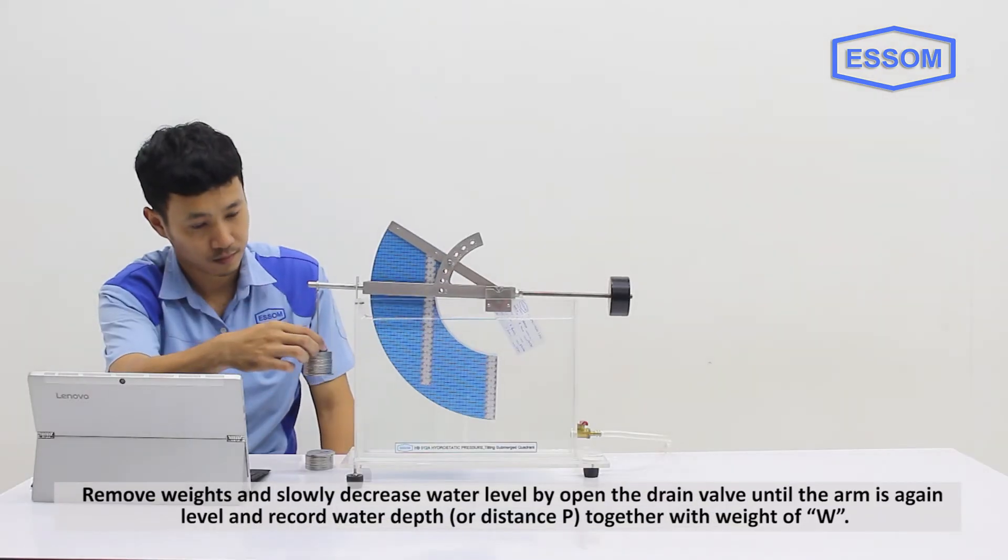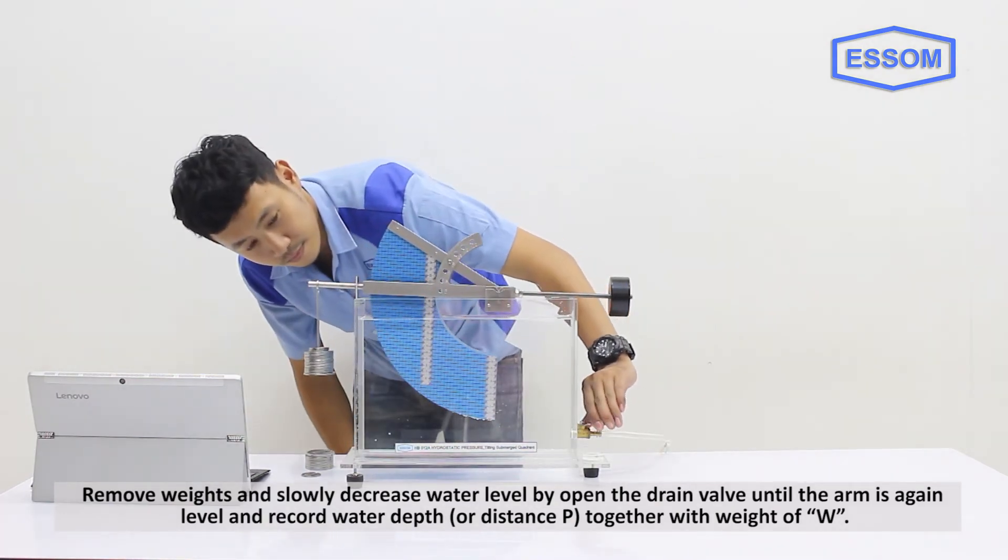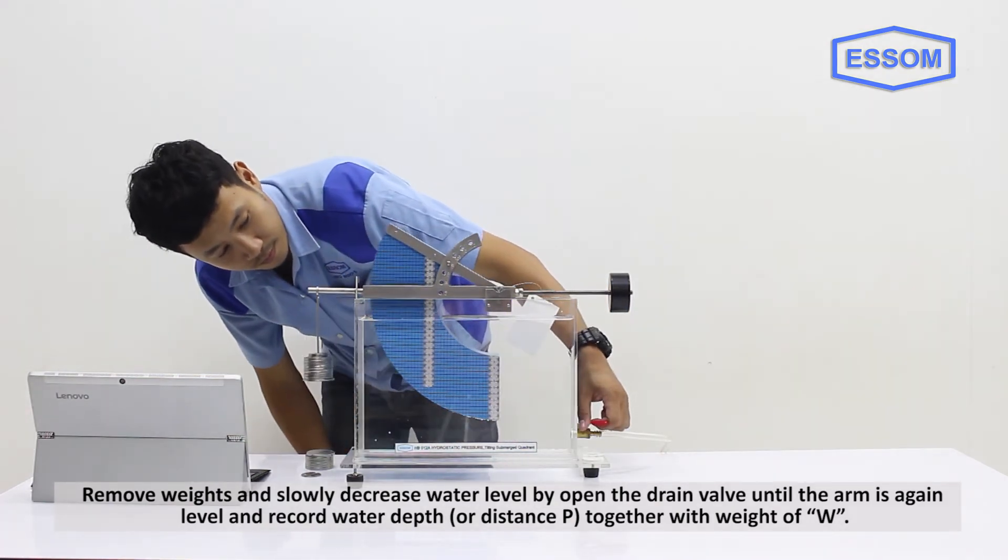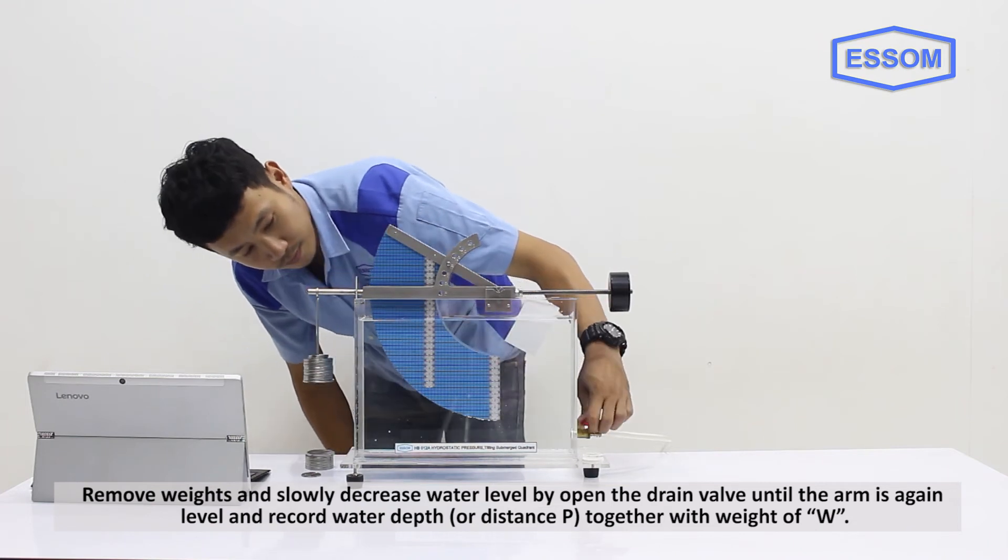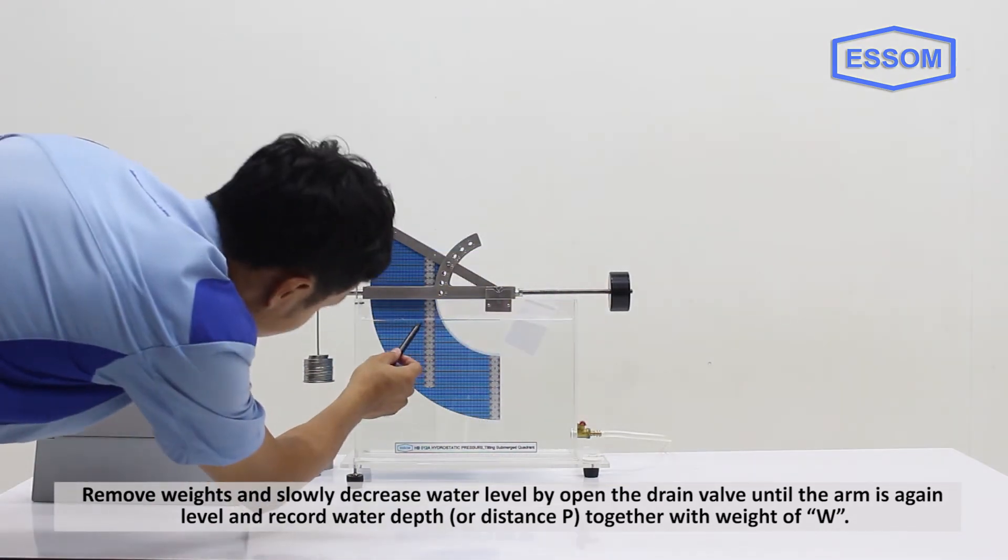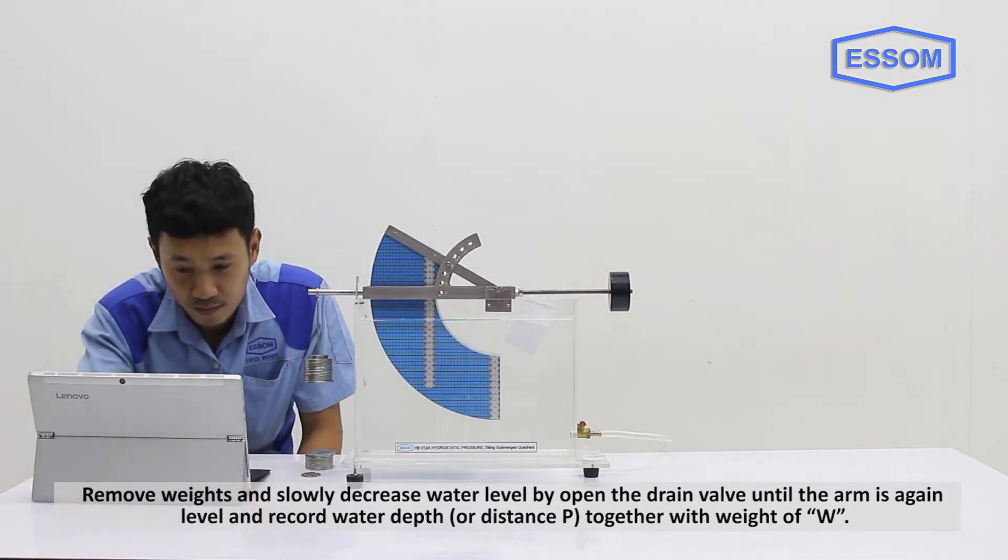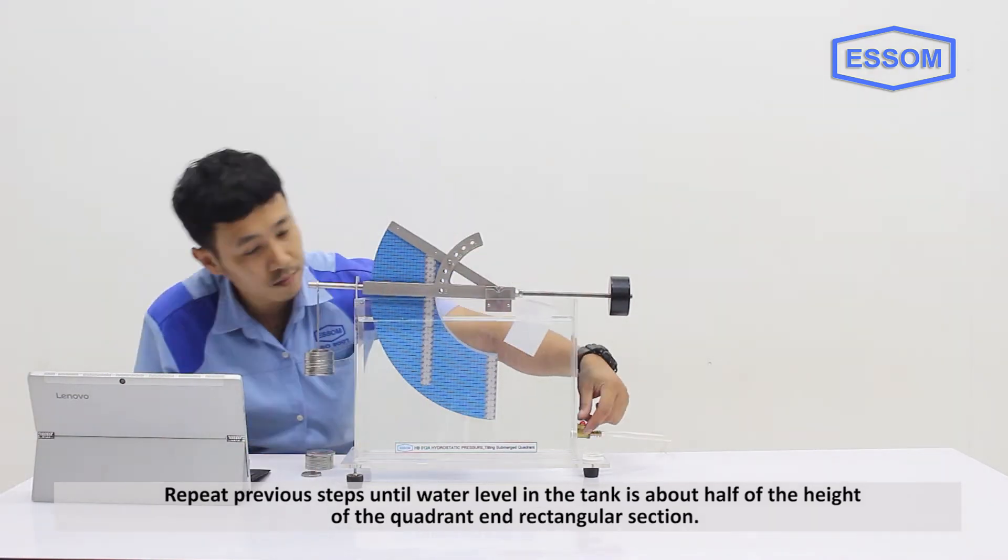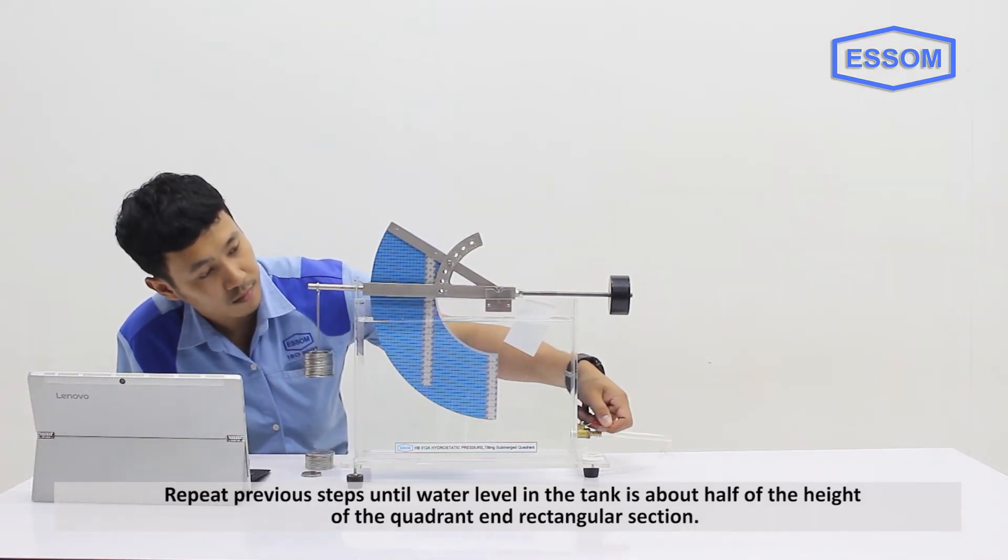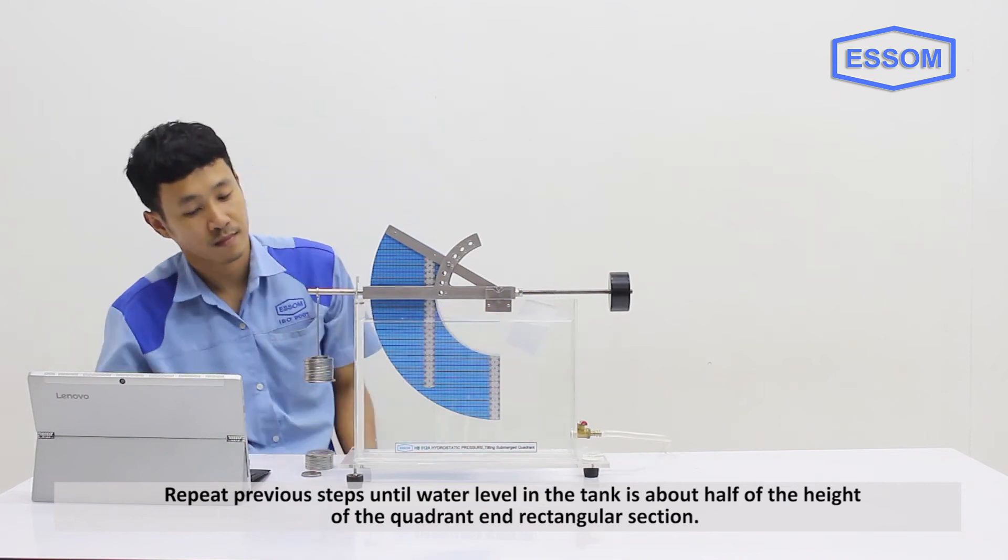Remove weights and slowly decrease water level by opening the drain valve until the arm is again level and record water depth or distance P together with weight W. Repeat previous steps until water level in the tank is about half of the height of the quadrant end rectangular section.